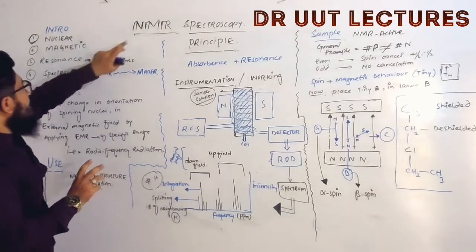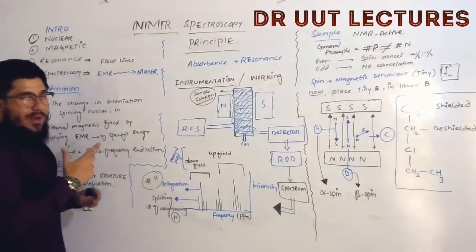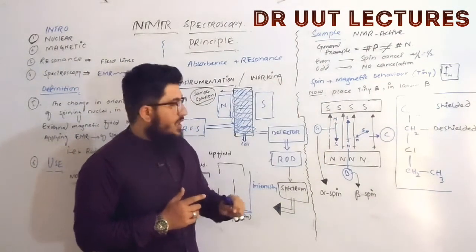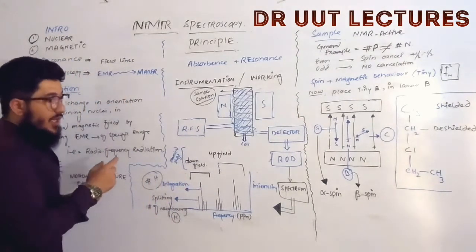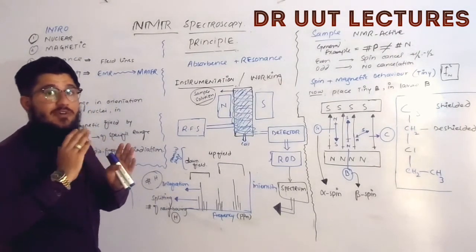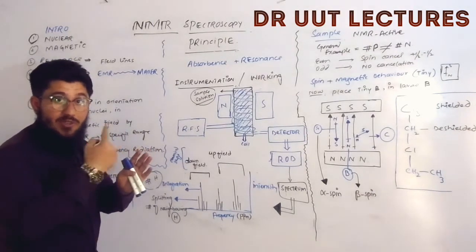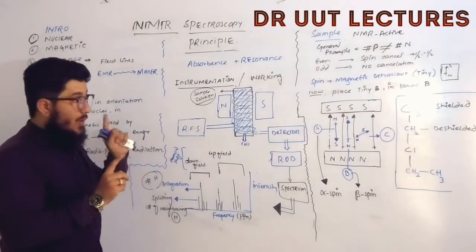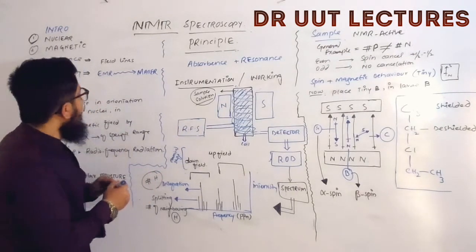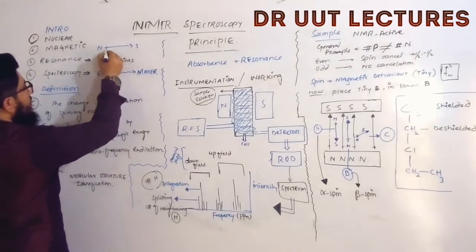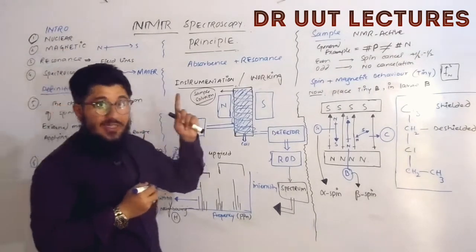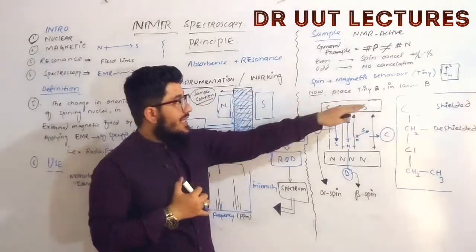This resonance will be of the field lines. A magnet has field lines running from north to south, as shown in the diagram. Resonance here relates to the physics concept of energy and frequency. Our nucleus will also behave like a magnet, and for now you need to know that our nucleus is also having field lines.